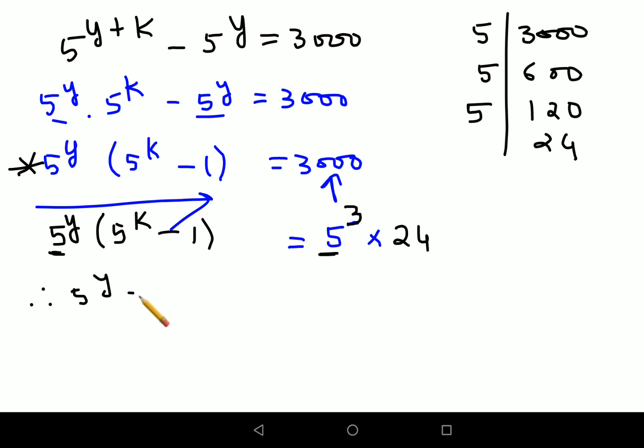5 raised to Y equals to 5 cubed. Therefore, Y equals to 3. Now what happens in this case is, I can also say 5 raised to K minus 1 gets you 24.